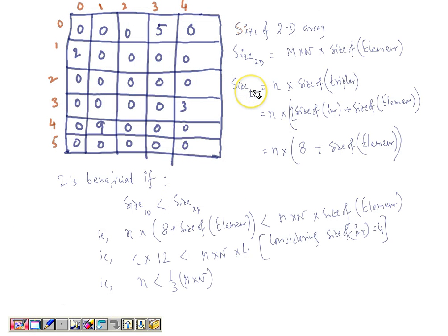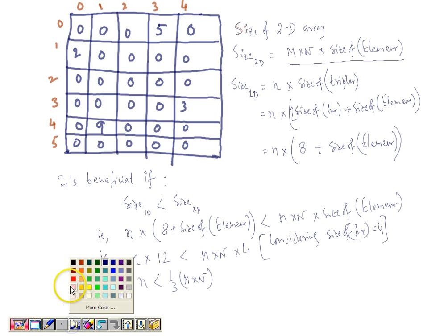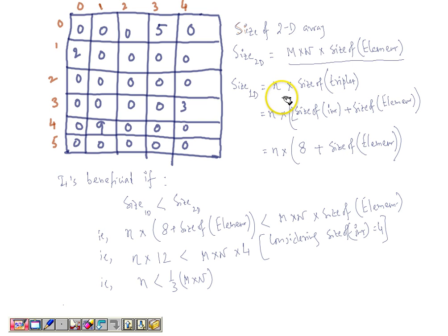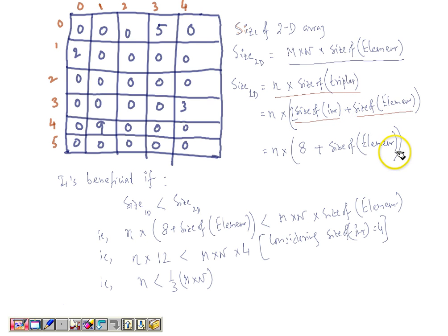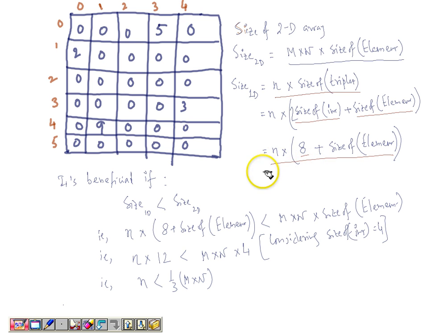The traditional 2D representation of the sparse matrix costs m×n × size_of_element memory. If we represent the sparse matrix with a one-dimensional array and there are n non-zero elements, then we store the row index, column index, and value for each. Since row and column indices are integers, that's two integer fields plus the element size. If the size of an integer is 8, the cost per element is 8 + size_of_element. Representing with a 1D array is beneficial only if this 1D array size is less than the 2D array size.